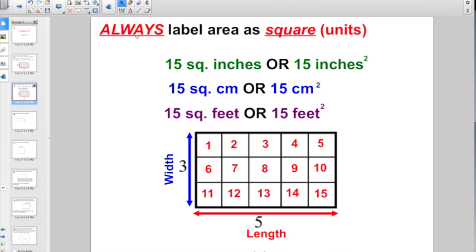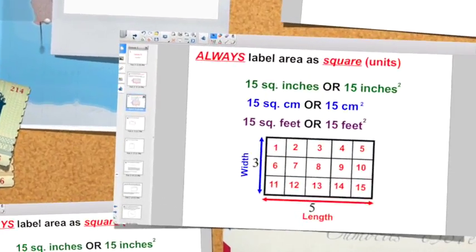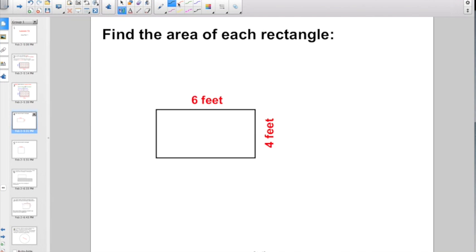The other thing we want to talk about is when you are talking about area, you always label the area as square units. You can't just say feet or inches or centimeters. It would have to be square inches - you could abbreviate 'square' or you can just put the little two in the corner. That little two stands for square. You always have to label it as square units.